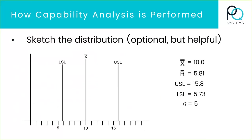Let's say we've collected data. The average of my data is 10.0 — that's my X double bar. My subgroup size is five. My average range is 5.81, and I've got some upper and lower specs. So that's what my spec spread looks like relative to my mean of the data. Right away you can see one thing I could improve: if I could move my mean so it's midway or exactly at the midpoint of the upper and lower spec, it looks like I could move it to the right just a little bit.